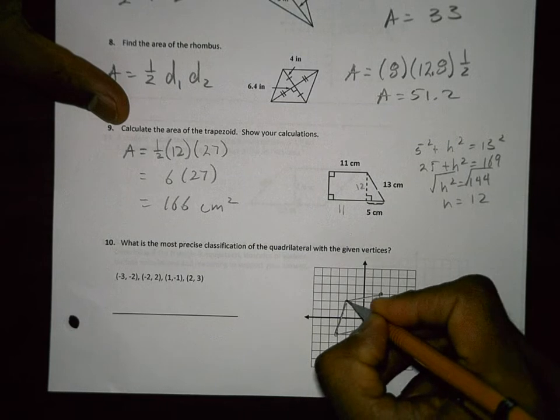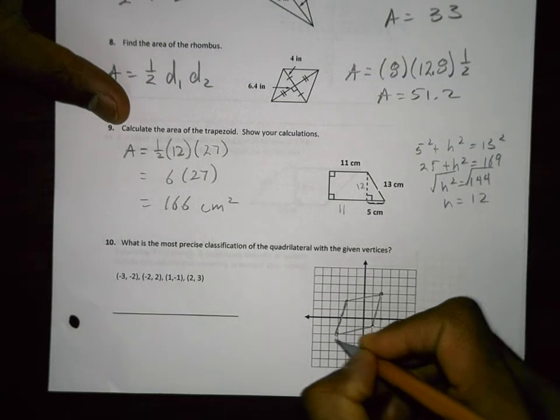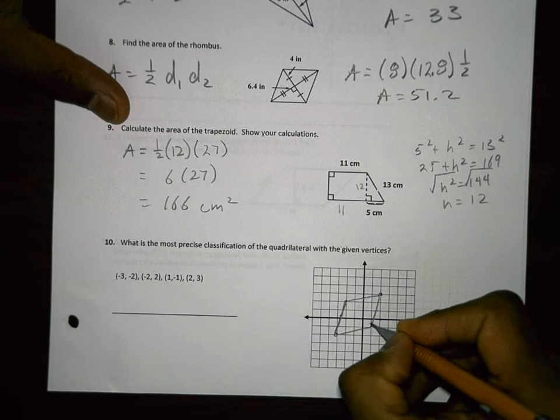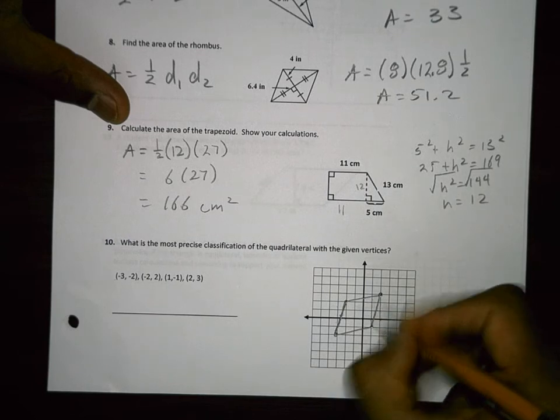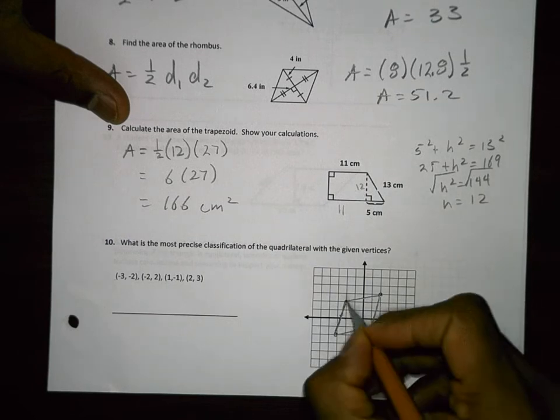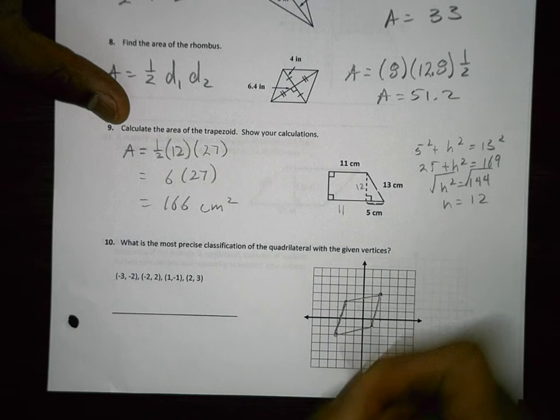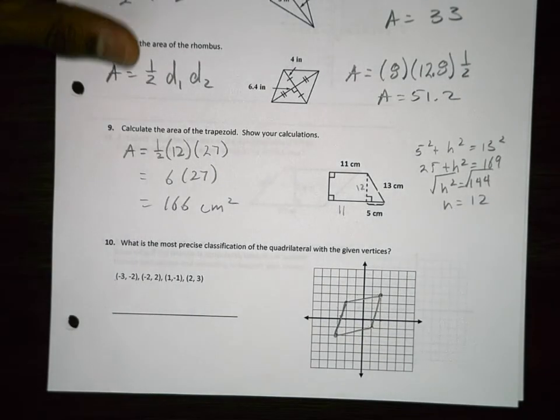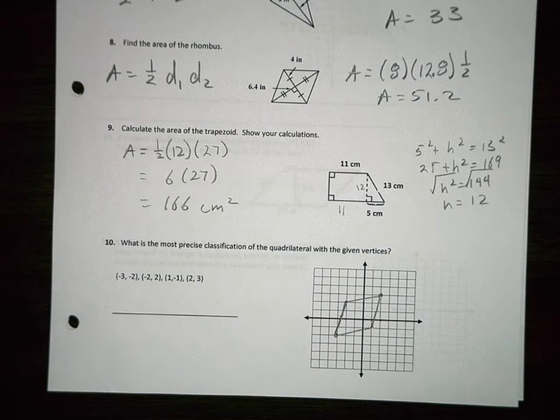So opposite sides. So these two need to be parallel. So they need to have the same slope. This is up 4 over 1. So these two sides are parallel. This is up 1 over 4. So opposite sides are parallel. So it is a parallelogram. So the next question is can I go a little further? Is it actually a square or a rectangle?